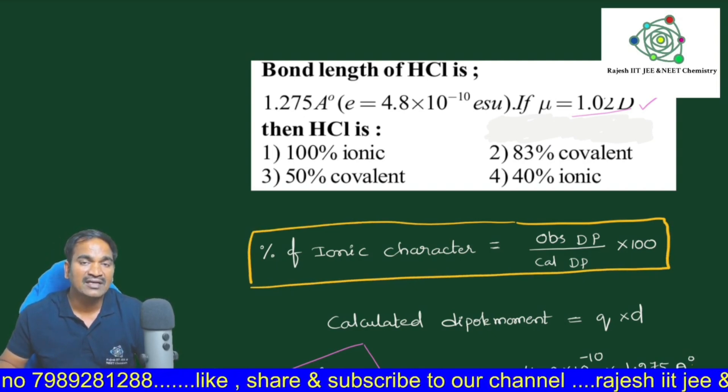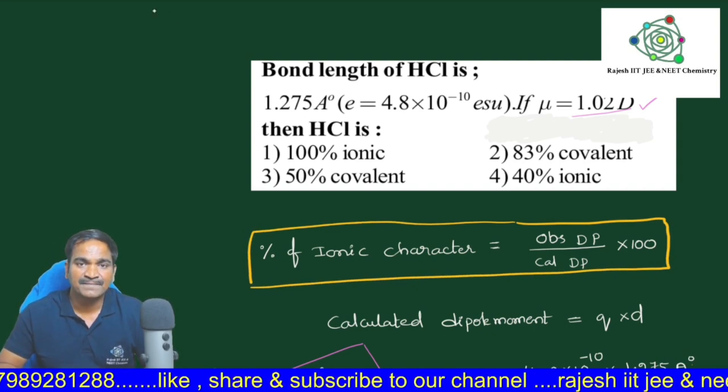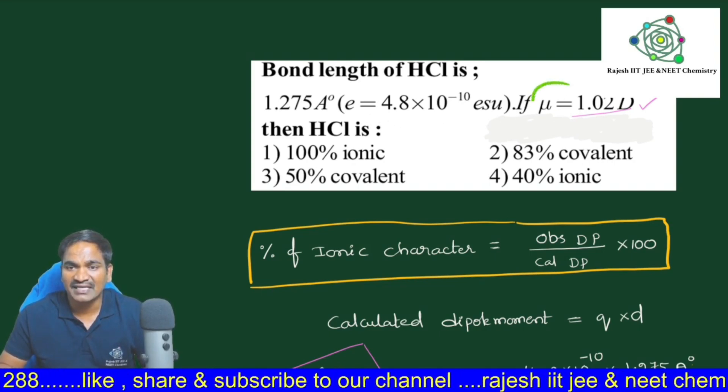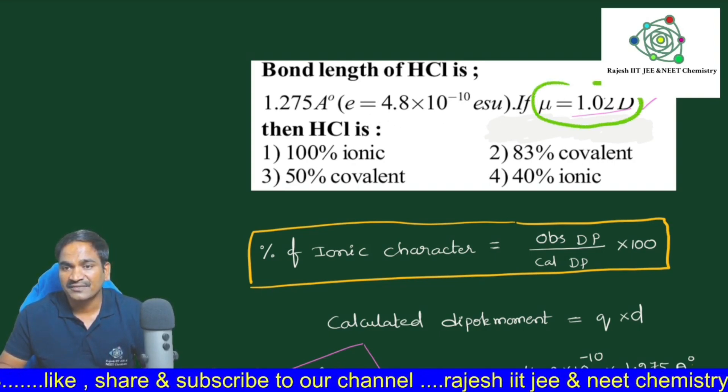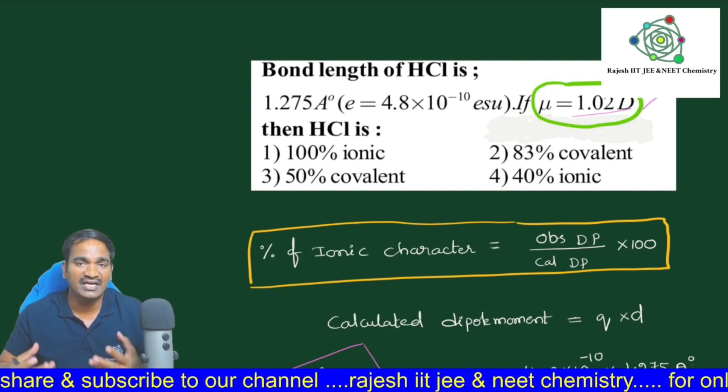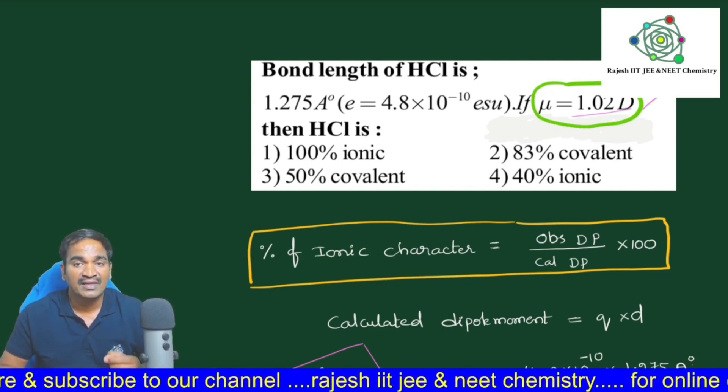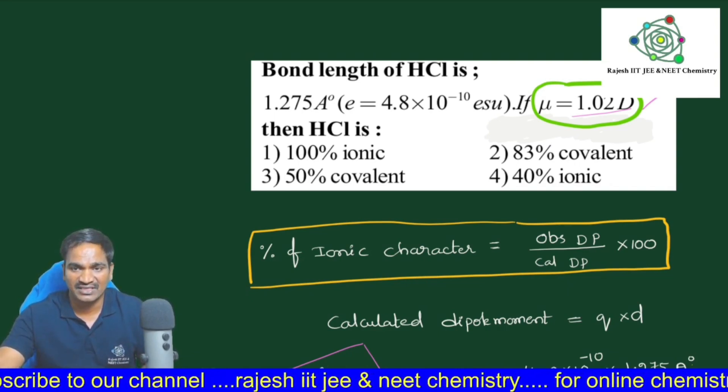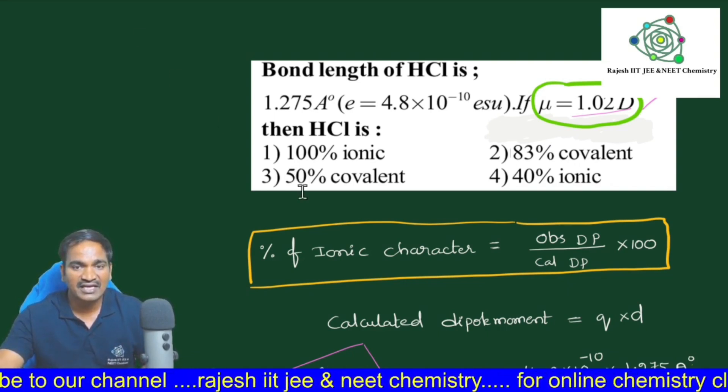In this question, they already mentioned what the observed dipole moment is. So now what should we calculate in this problem? The calculated dipole moment needs to be calculated. For the calculation of dipole moment, the formula is: dipole moment equals Q into D, charge into distance between the two poles.